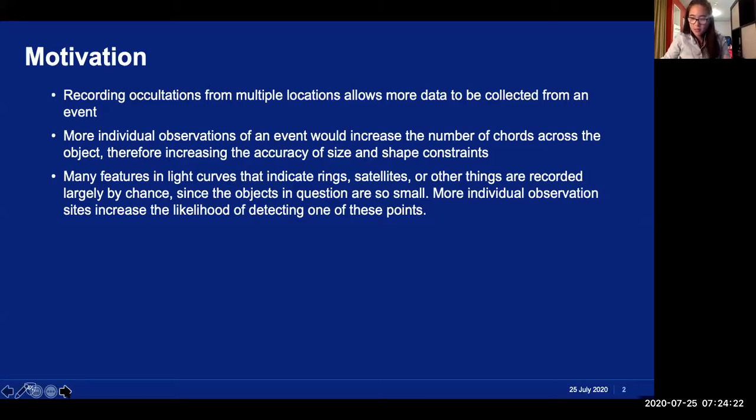Besides size and shape, more observations also increase the chances of detecting other features of occulting bodies like rings or satellites if they exist. A satellite, for example, is usually incredibly small, even in comparison to the occulting body. And so if it exists, it's very easy to miss in a recording. When satellites are recorded, especially if they've never been recorded before, then it's usually by chance. And so increasing the number of individual observations which are made on one event increases the likelihood that if one of those features does exist that it's detected in one of the recordings.